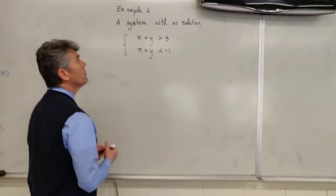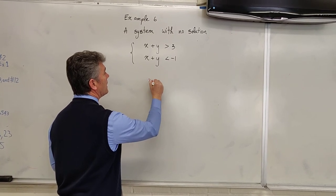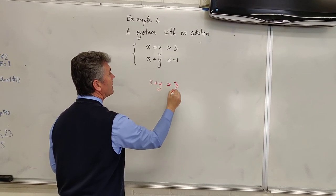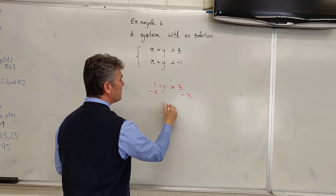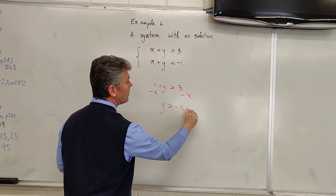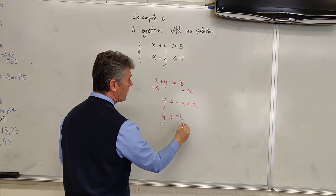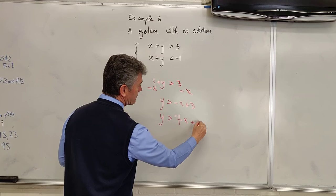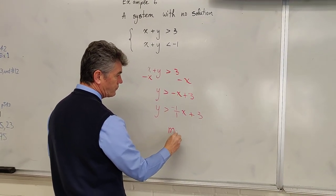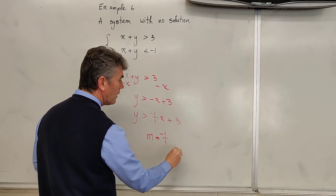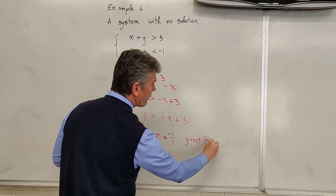As always, take your inequality and put it in slope-intercept form. So we have x plus y is greater than 3. Let's subtract x from both sides. We have y is greater than the opposite of x plus 3, or y is greater than negative 1 over 1x plus 3. Here we have the slope m equals negative 1 over 1. We have our y-intercept 0 comma 3.